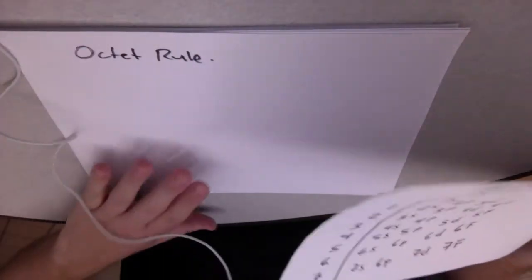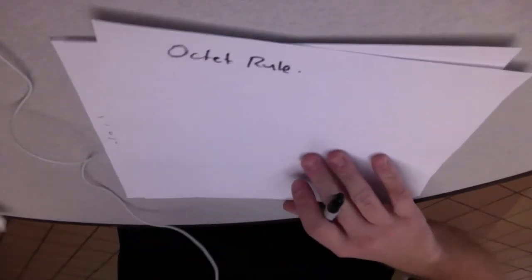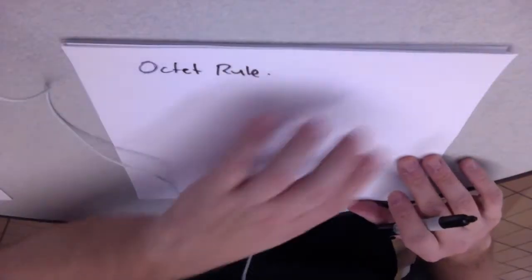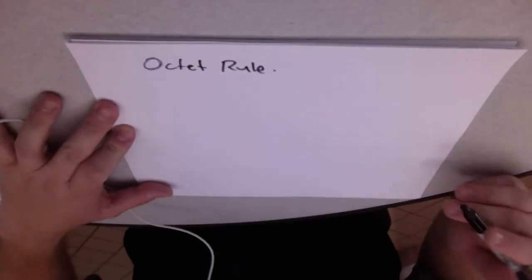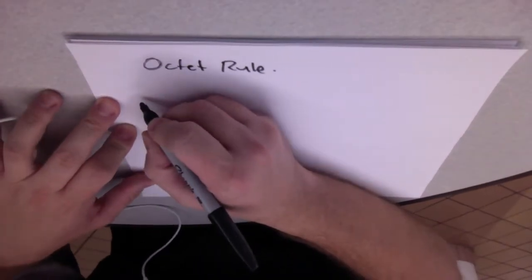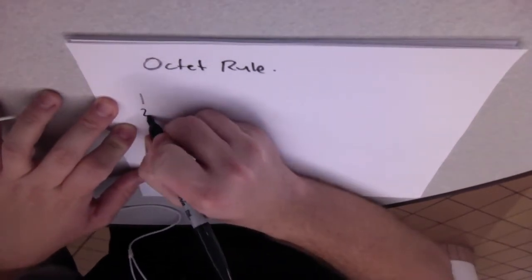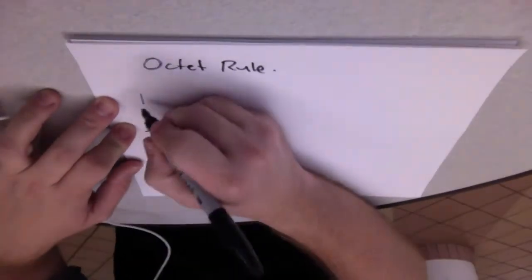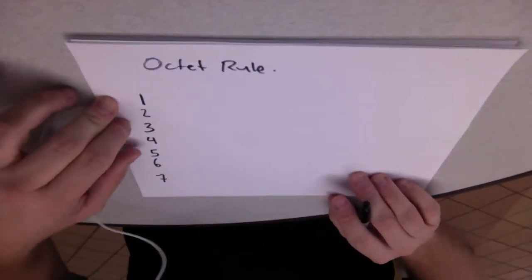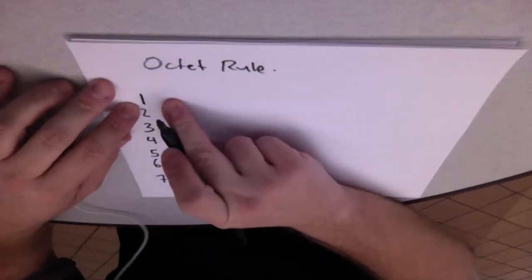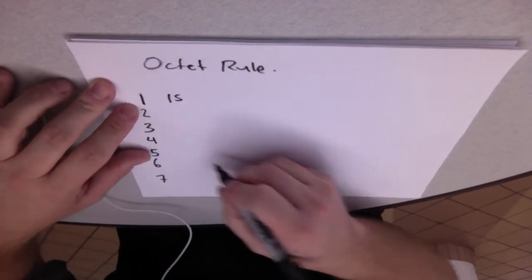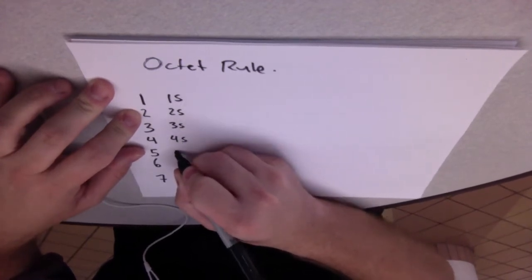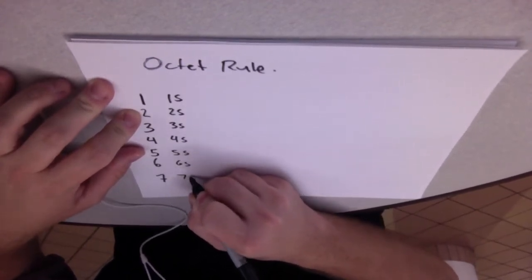Before we get too far into that, I just want to make sure you're okay on electron configuration. What you can do to help yourself remember how to do that is just write on a piece of paper: 1, 2, 3, 4, 5, 6, 7. This will help you with filling up your orbitals. Then start at 1S, 2S, 3S, 4S, 5S, 6S, 7S.